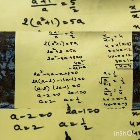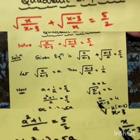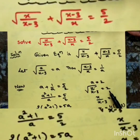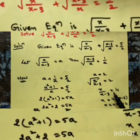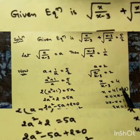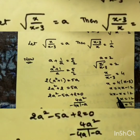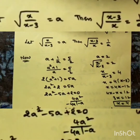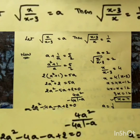So a = 2 or a = 1/2. But a = √(x/(x-3)). For a = 2: √(x/(x-3)) = 2. Squaring both sides: x/(x-3) = 4. Cross multiplying: 4(x - 3) = x, giving 4x - 12 = x. Sending x to the left: 3x = 12, so x = 4. This is the first value.